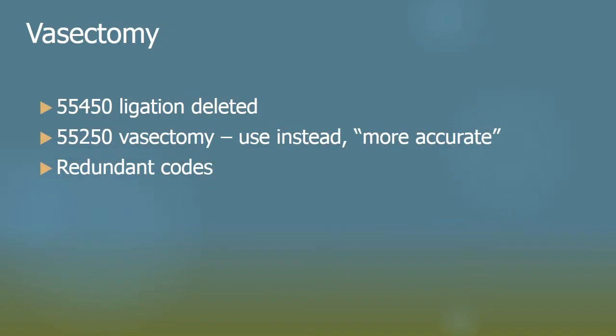A vasectomy — this looks like a common sense CPT correction where they deleted a code that wasn't ever used and probably didn't need to be there, 55450 — ligation of the vas deferens. It turns out there was already a code for a vasectomy done by ligation, 55250. So we'll just use that instead, like everybody was apparently using, as it was determined to be the more accurate code in that scenario. It was a case of redundant codes.